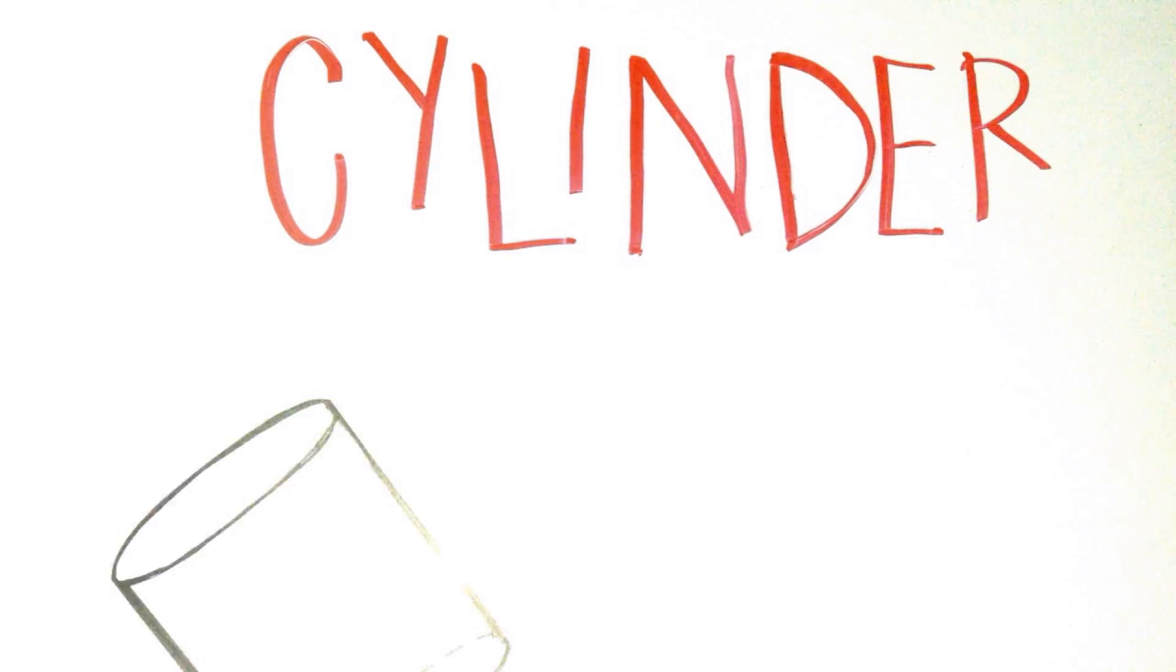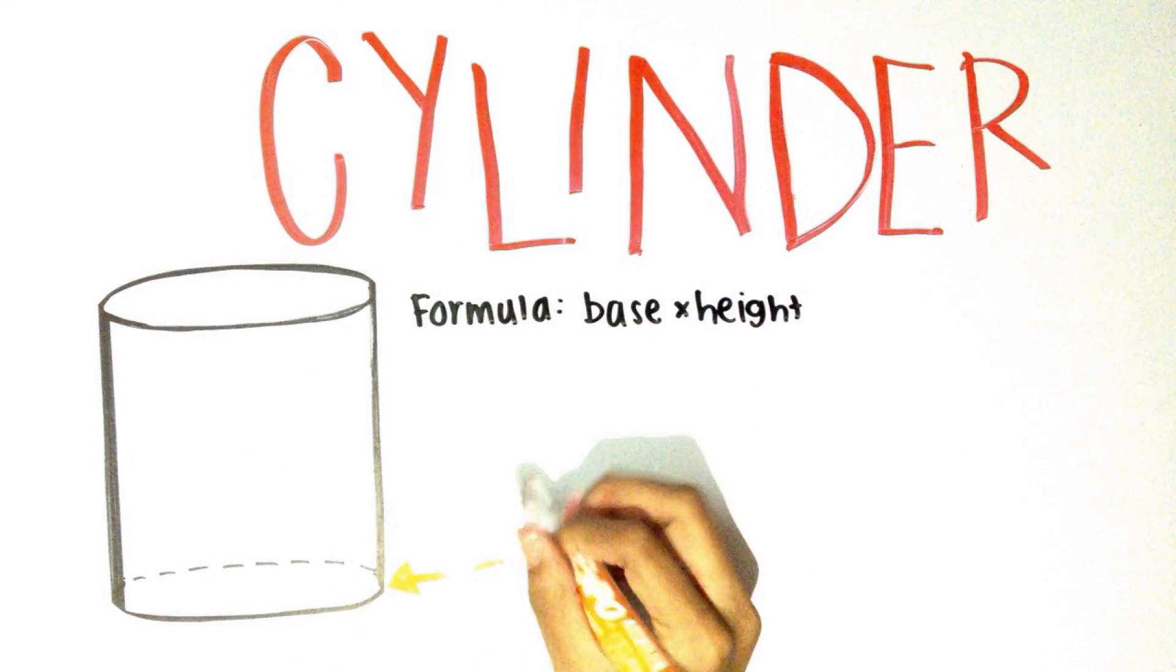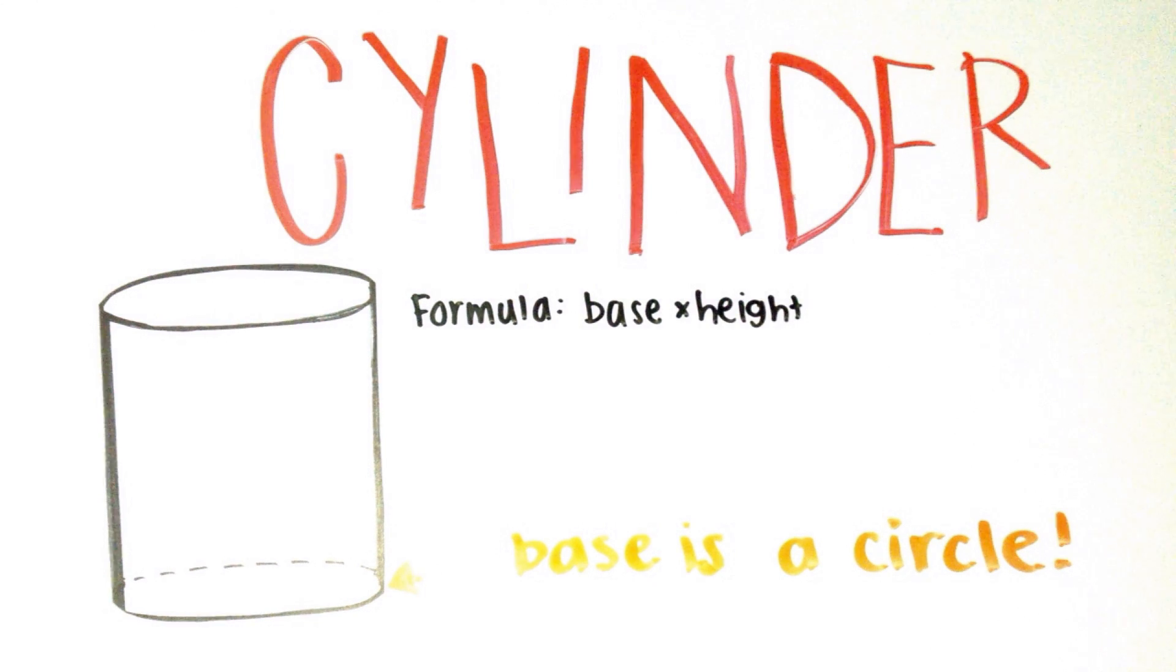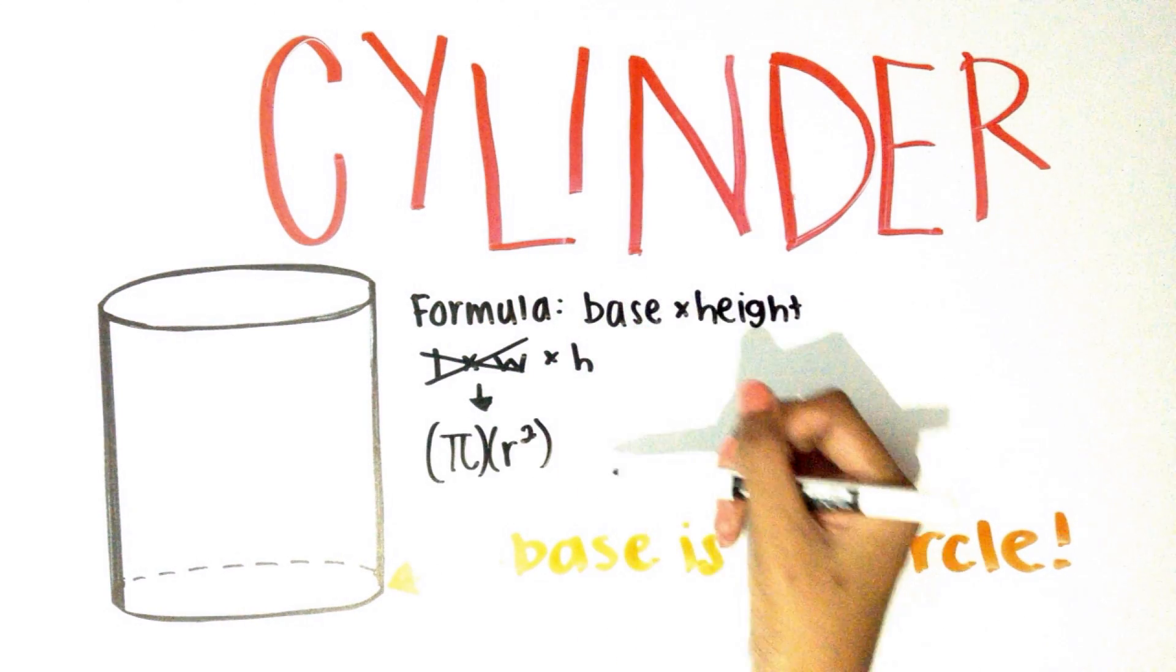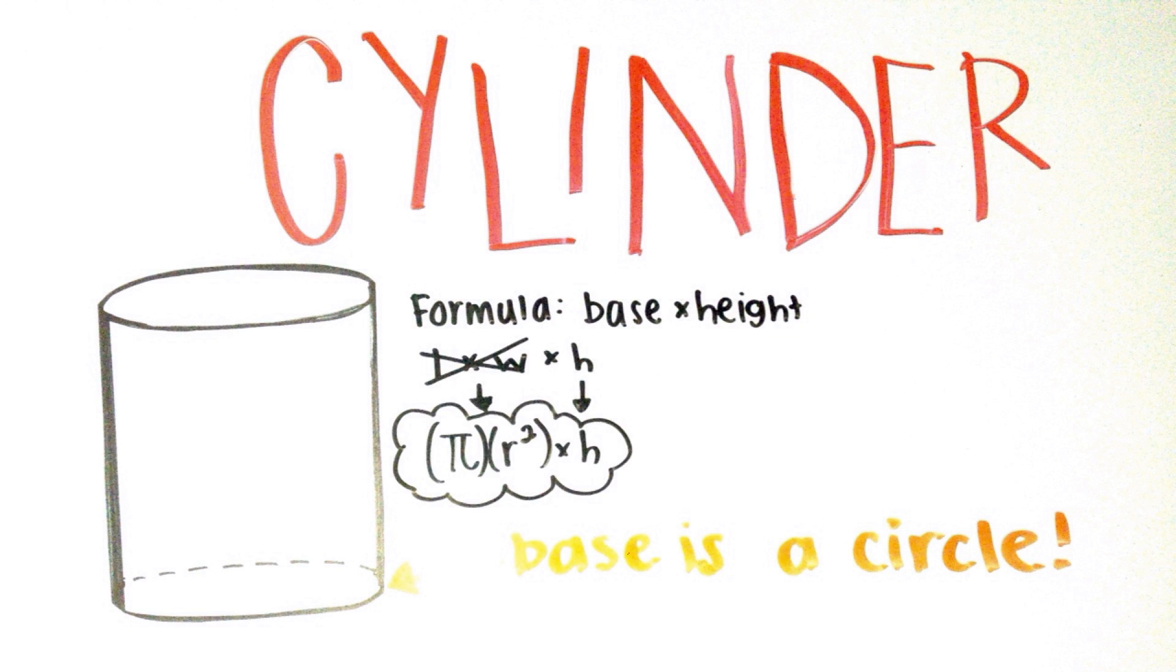The volume for a cylinder is also base times height, but now there's a difference: the base is a circle, so it's not length times width anymore. Instead, it's pi times radius squared. After the area of the circle is found, it's multiplied by the height. To find a cone's